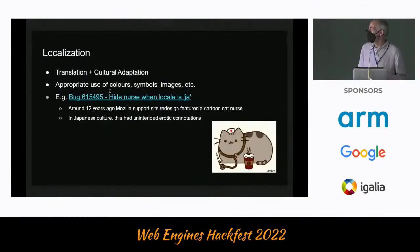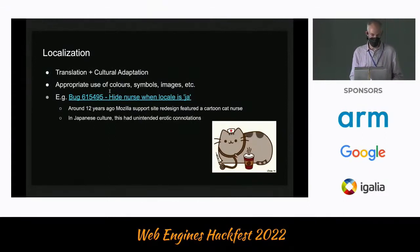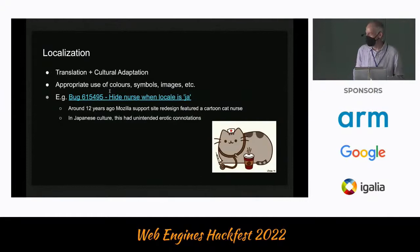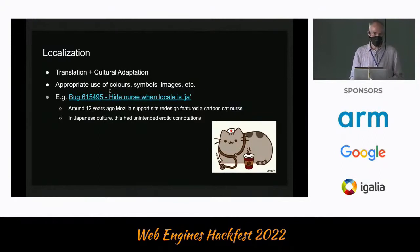So what's localization? A localization is basically translation plus cultural adaptation — looking beyond purely linguistic factors, things like the appropriate use of colors, symbols, images and things like that. An example of this is a bug we had about 12 years ago. The Mozilla support site was redesigned to feature a cartoon cat nurse, and it turned out that in Japanese culture this had some unintended erotic connotations and it had to be hidden in Japan. So that's an example of something that's not a linguistic concern but is still necessary to adapt your product to a different location.